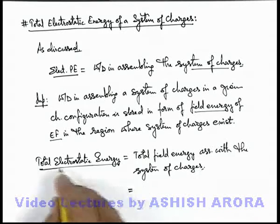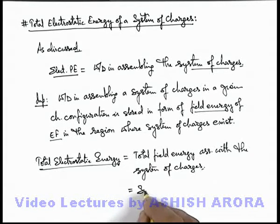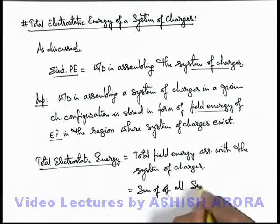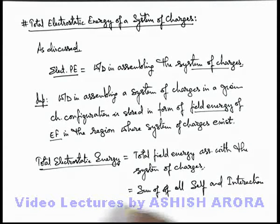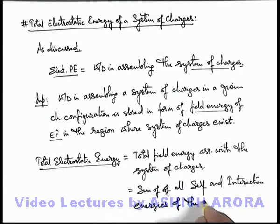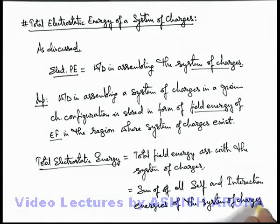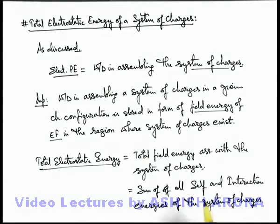So we can simply write that the total electrostatic energy can be calculated as the sum of all self energies and interaction energies of the system of charges. Whenever there are some charged bodies given to us, the total electrostatic energy of the system can be written as the sum of all self energies of the objects as well as the total interaction energy of the system of charges.